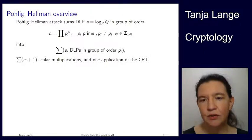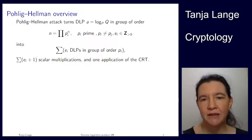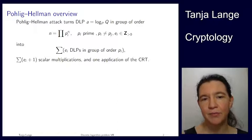And then at the very end I have to use the Chinese remainder theorem just once to get the n, the a modulo n. So these discrete logs get me information of a modulo pi and then a modulo pi to the power ei. And then eventually I can put things together to the whole n.